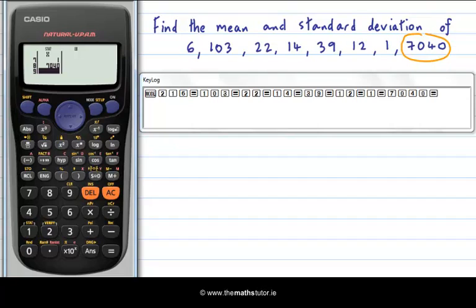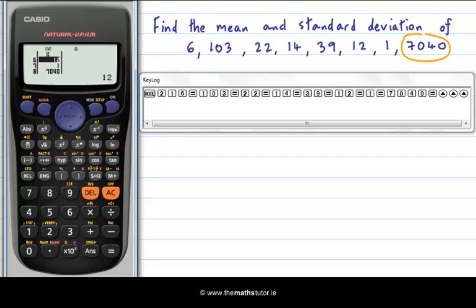Now if you make a mistake along the way, you can always scroll up and scroll down to edit any of these. Okay, so I have my eight pieces of data in. Now I need to find the mean and the standard deviation.